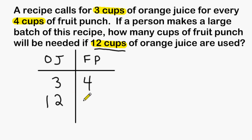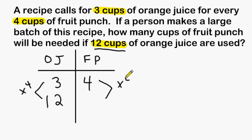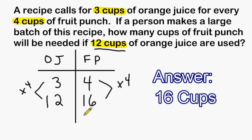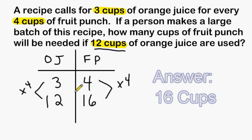Now all we have to do is write a number in the fruit punch column so that 12 compared to that number will be equivalent to the ratio 3 out of 4. We look at how many times bigger the top number became — 3 increased by a factor of 4, so this number must also increase by a factor of 4. And 4 times 4 is 16. So to make this recipe with 12 cups of orange juice, you must use 16 cups of fruit punch to keep the same ratio of 3 cups of orange juice for every 4 cups of fruit punch.